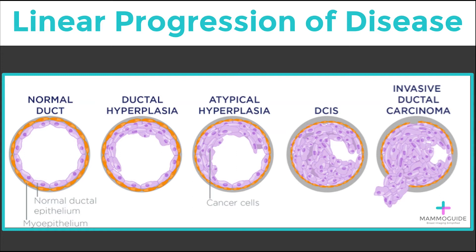One of the challenging aspects of breast cancer is that this stepwise progression does not happen in a standard format. Some cancers will progress from normal to invasive disease in a matter of months, whereas other times this progression can take years. This oversimplified model helps with understanding the progression of breast cancer.